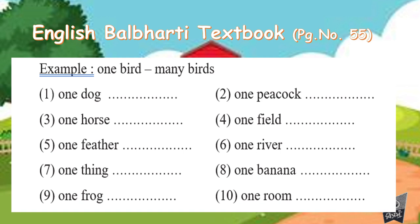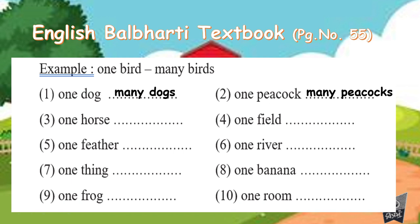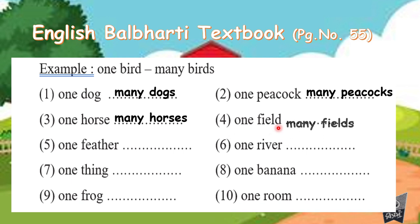We are going to do the same exercise here: one bird and many birds. The first example given is one dog — what will you write? Many dogs. Dogs means you have to put 's.' So write 'many dogs.' Same way we will do the rest. One peacock, many peacocks — just adding 's' to make it many. One horse, many horses — again we just added 's.'